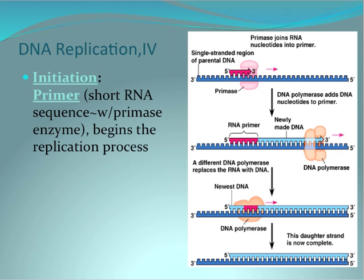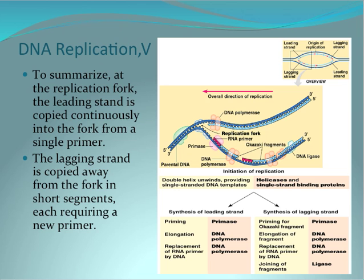For the lagging strand, before adding the Okazaki fragments, an initiation primer is required to begin the replication process. To summarize, at the replication fork the leading strand is copied continuously into the fork from a single primer, while the lagging strand is copied away from the fork in short segments, each requiring a new primer.